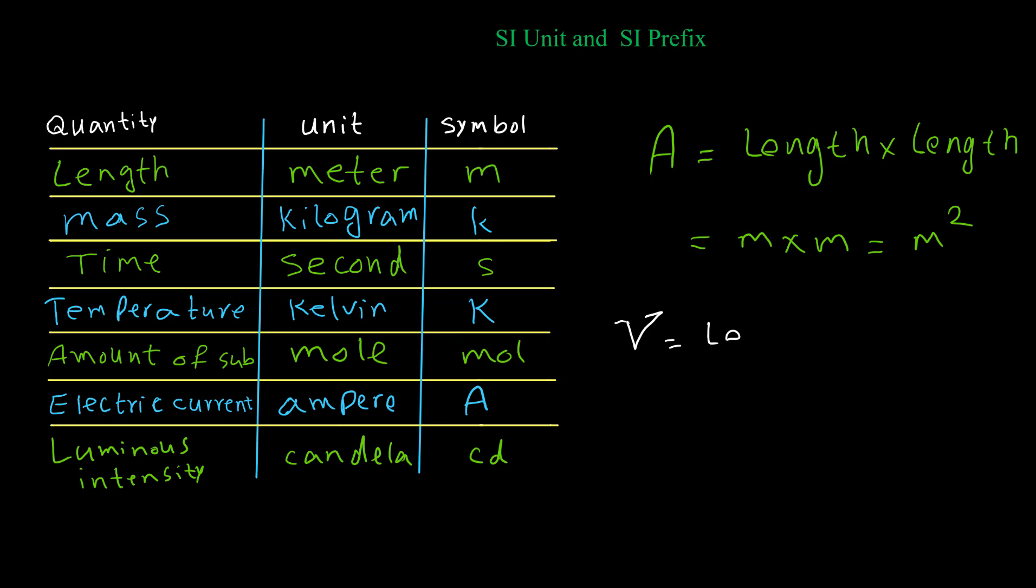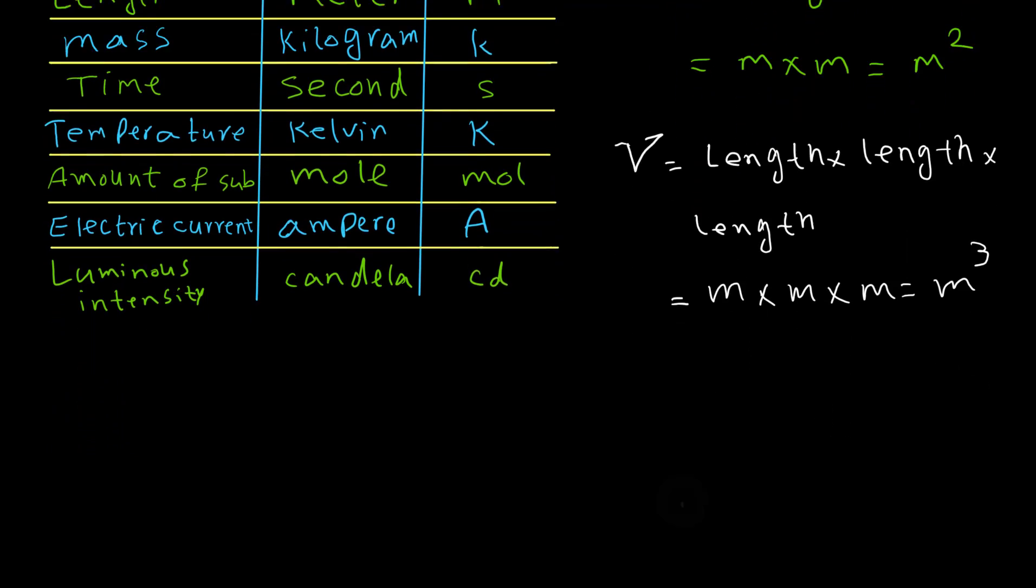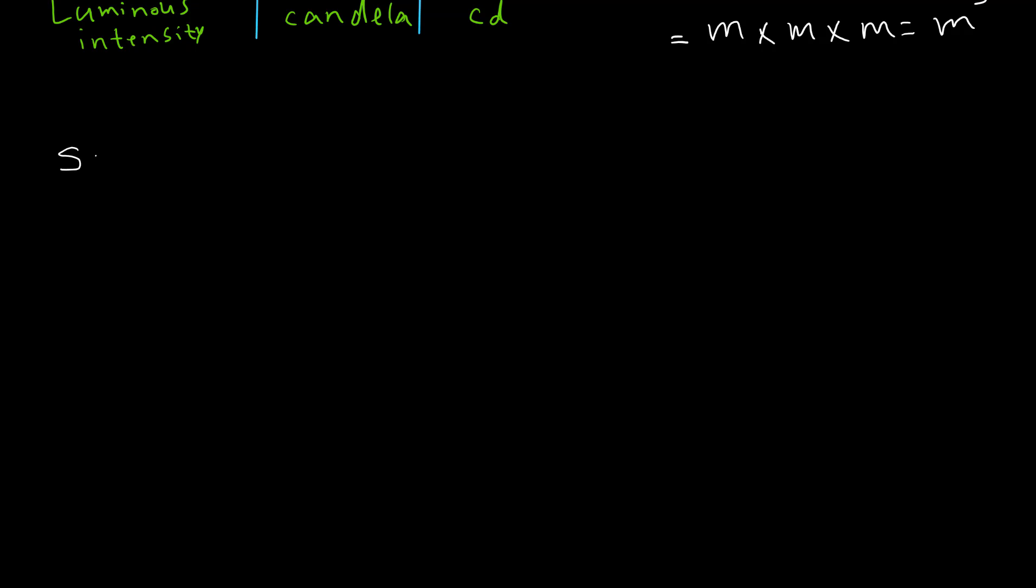For volume we have length times length times length, so the SI unit for volume is m times m times m, which is meter cubed. Let's have more examples for other quantities like speed or velocity. We know the definition for speed or velocity is distance over time. The unit for distance is meter and the unit for time is second, so SI unit for speed or velocity is meter per second.